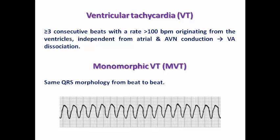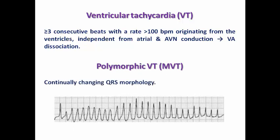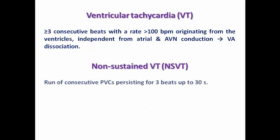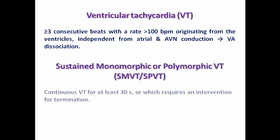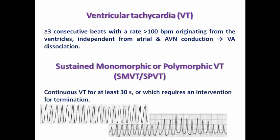VT can be monomorphic, showing the same QRS morphology from beat to beat, or polymorphic VT, in which the QRS morphology is continually changing. Non-sustained VT is a run of consecutive beats persisting from 3 beats up to 30 seconds as a maximum, resolving spontaneously with no need for cardioversion. Sustained VT, whether monomorphic or polymorphic, is continuous for at least 30 seconds and requires an intervention for termination.